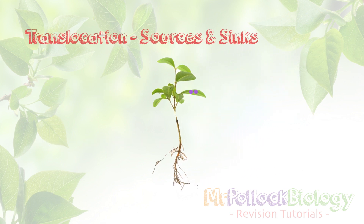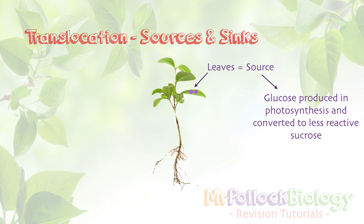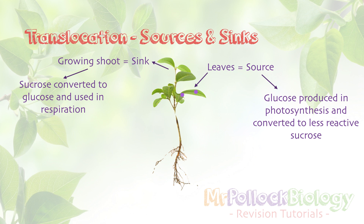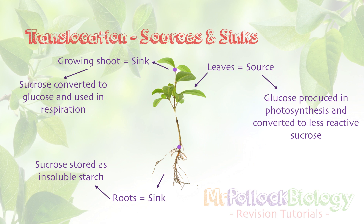If we think about sources and sinks, the leaves are pretty much always going to be our source because they're doing fantastic photosynthesis. The glucose produced in photosynthesis is too reactive to have kicking around, so we convert it to the less reactive sucrose. There are two possible sinks: the growing shoot, which requires a substrate for respiration, so we move sucrose up; or the root — the storage organ — where sucrose is stored as insoluble starch. That insoluble starch is key because if it were not insoluble, it would affect the water potential of the cells, potentially causing water balance problems and damage.